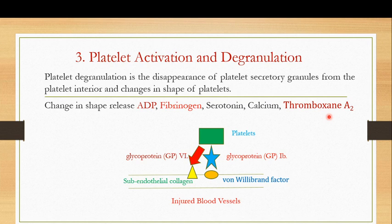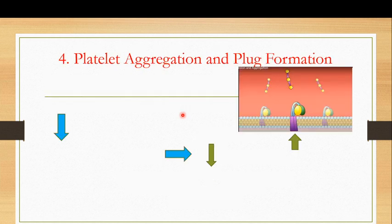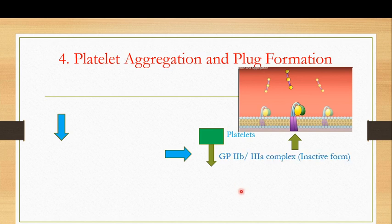In this video I am going to focus specifically on the functions of ADP and fibrinogen. The next step — when the platelets get activated and undergo degranulation — is responsible for platelet aggregation and plug formation. Platelets have an important receptor complex on their surface: the GP2B/GP3A complex. Initially, this GP2B/3A complex is in the inactive form, which has a bent conformation as shown in the image.